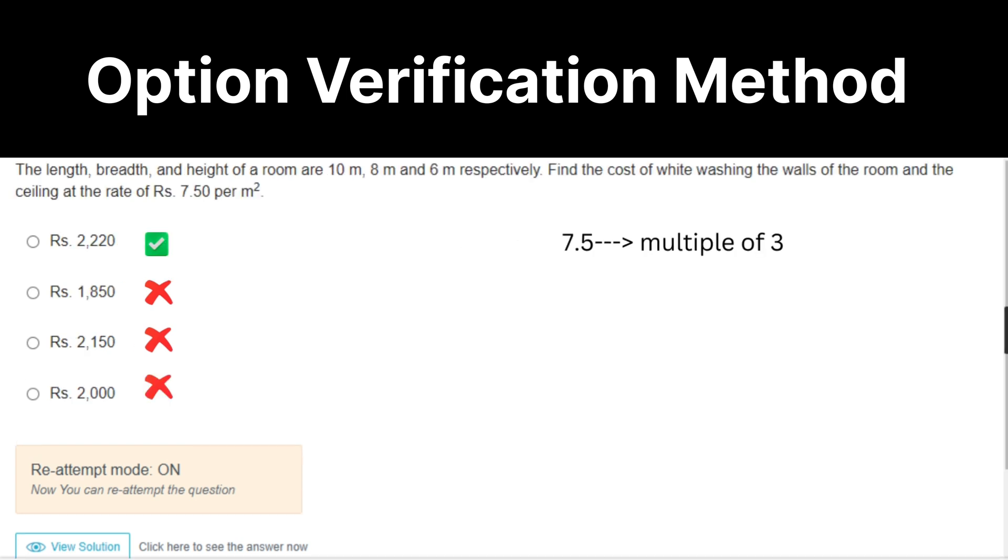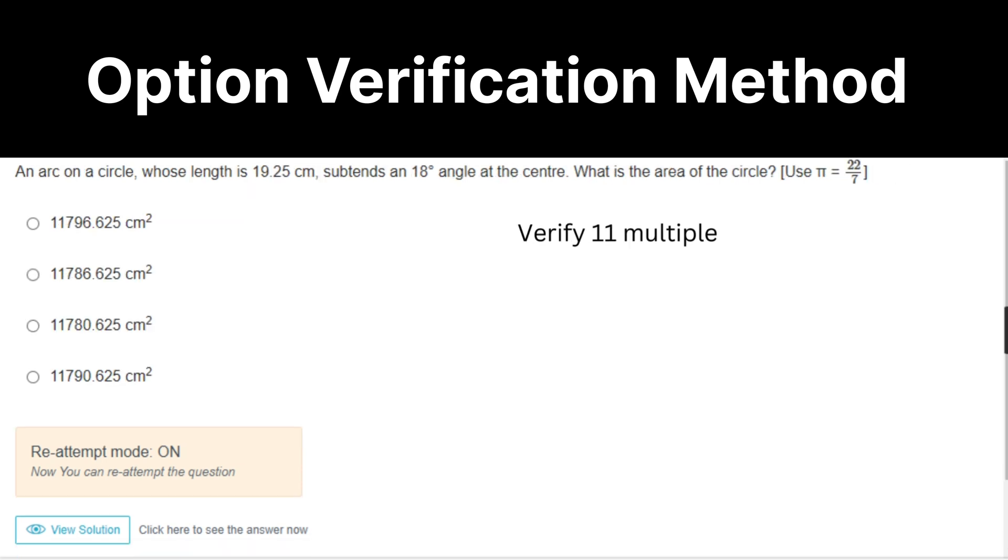At the rate of 7.5 per meter square, which means it will be a multiple of 7.5. 7.5 means 3 is a multiple. So you can verify the options. Here you have a circle. Again, 11 multiple. Just verify the options.